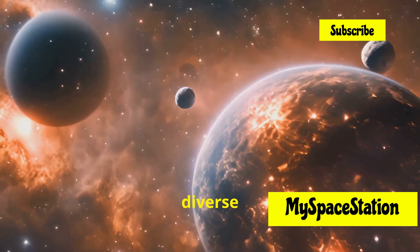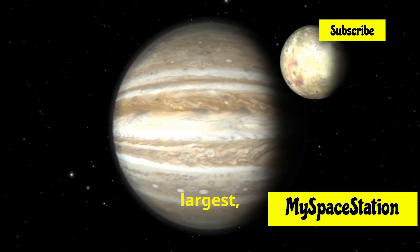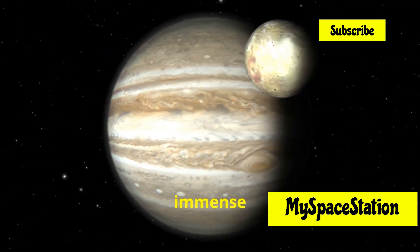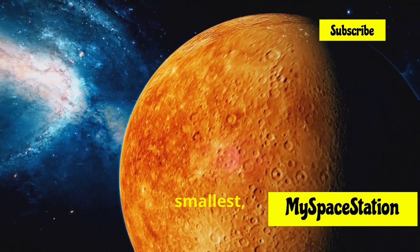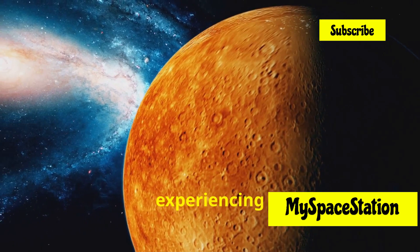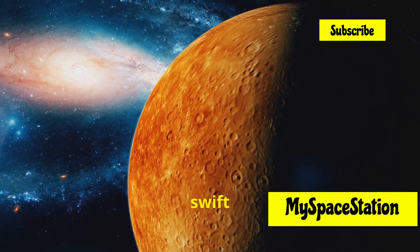creating a diverse and dynamic system. Jupiter, the largest, dwarfs Earth with its immense size and powerful presence. Mercury, the smallest, is closer to the Sun than we are, experiencing extreme temperatures and swift orbits.